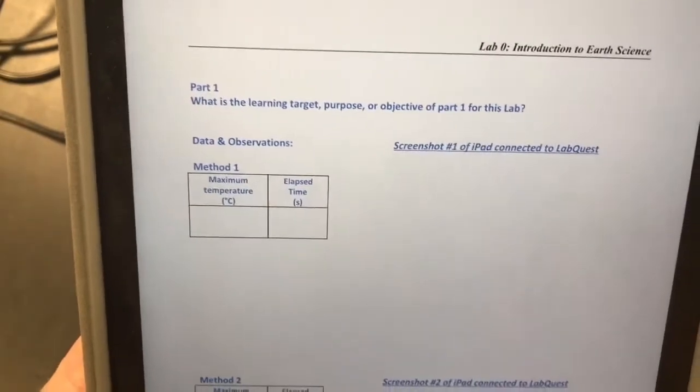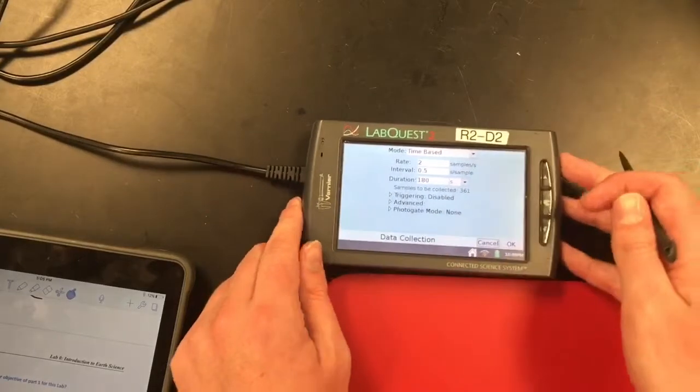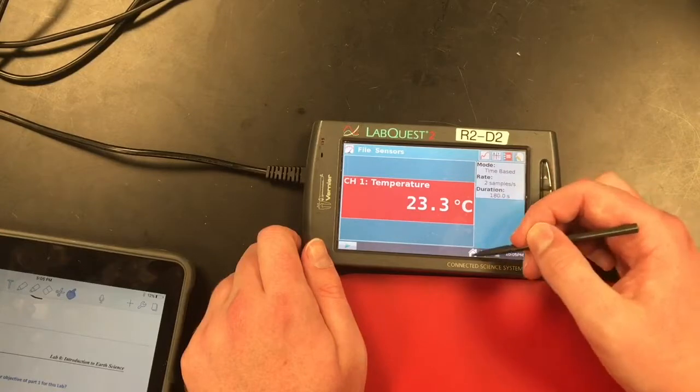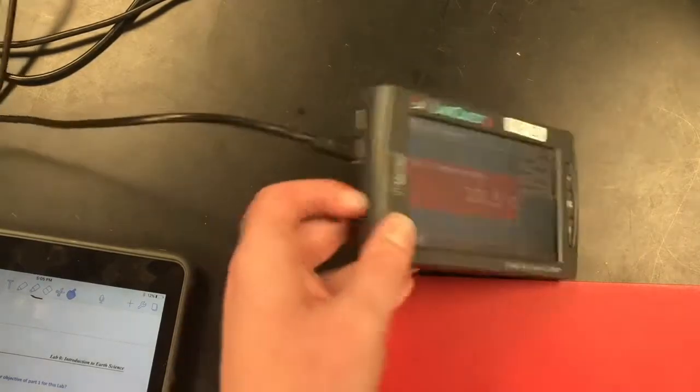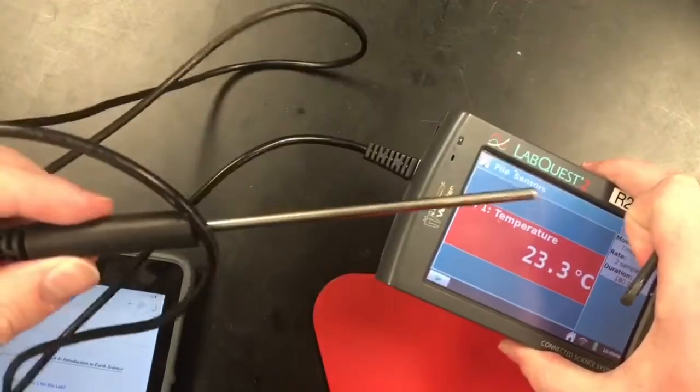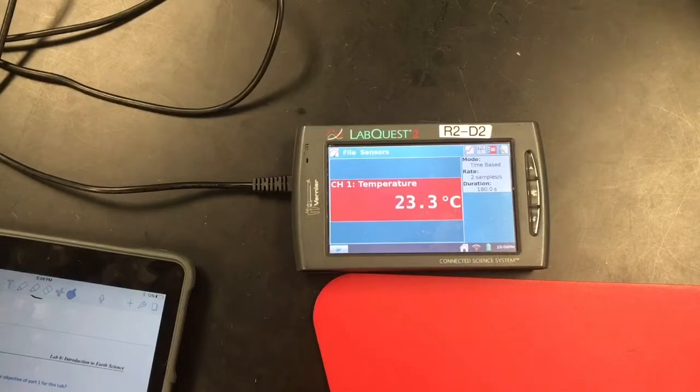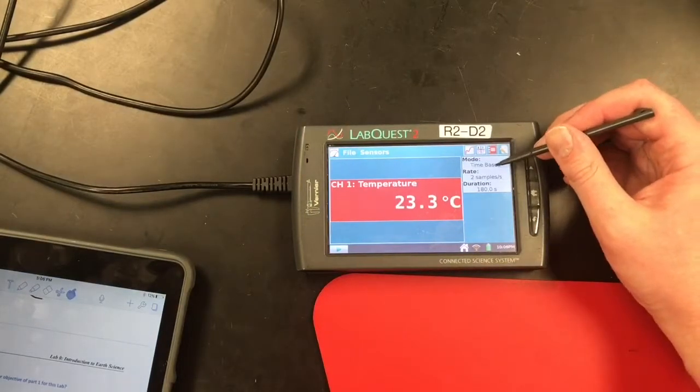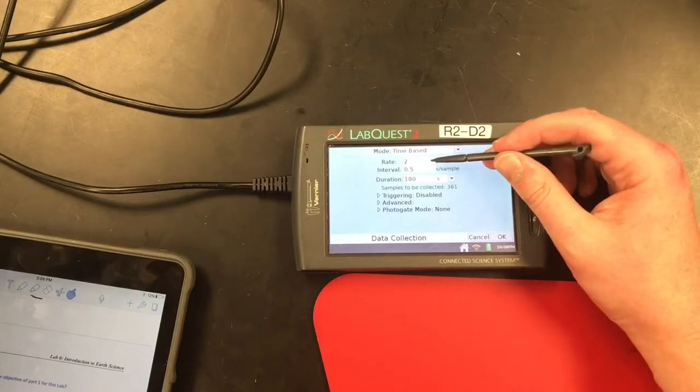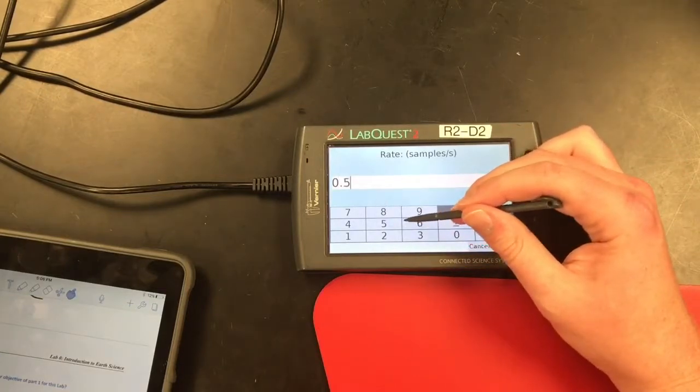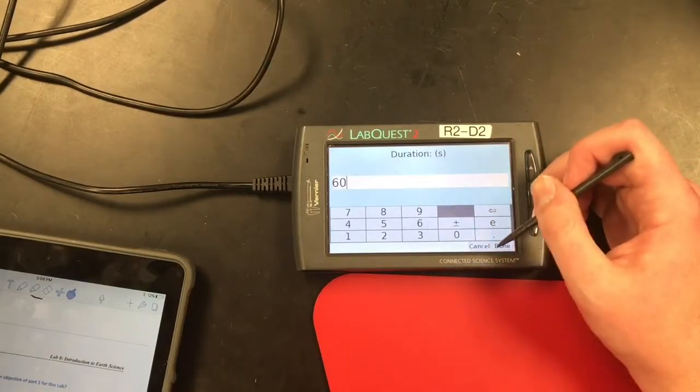On the second page of our lab worksheet, the learning target purpose or objective of part one of this lab is going to be to learn how to use the time-based mode on our LabQuest 2 device. So if I cancel out of this, this is on our LabQuest device app. To go back to the home LabQuest app, it's important before you start doing anything further to hook up your temperature probe. So hook up your temperature probe into channel one. Leave it to the side for now. Once it's hooked up and once you're seeing a reading, I'm seeing 23.3 degrees Celsius, which looks right. I'm going to go to time-based. Our rate here is going to be 0.5 samples per second. And I'll have our duration be, let's just say a minute. So 60 seconds.